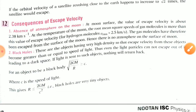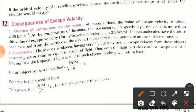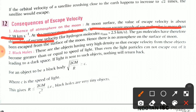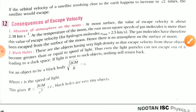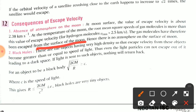First we talk about the absence of atmosphere on the moon. At the moon surface the value of escape velocity is about 2.38 kilometers per second. At the temperature of the moon, the root mean square speed of gas molecules is more than this value of escape velocity. The V_rms of hydrogen atoms is 2.5 kilometers per second. So the gas molecules have therefore escaped from the surface of the moon, and hence there is no atmosphere on the surface of the moon.